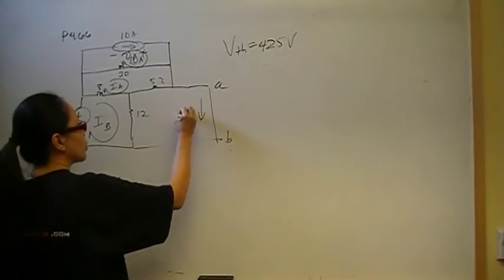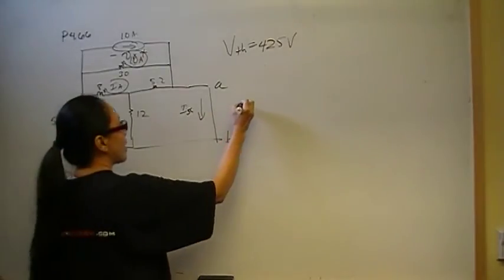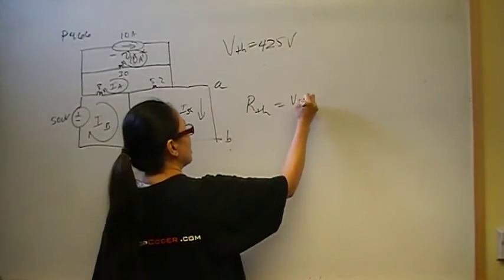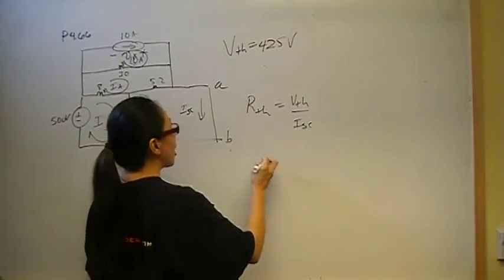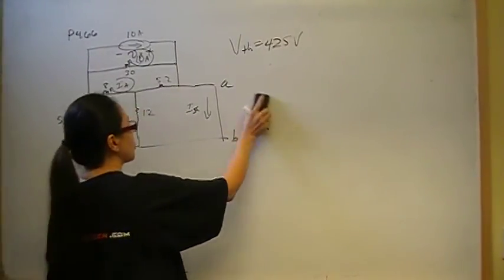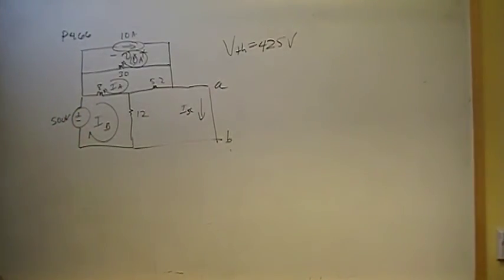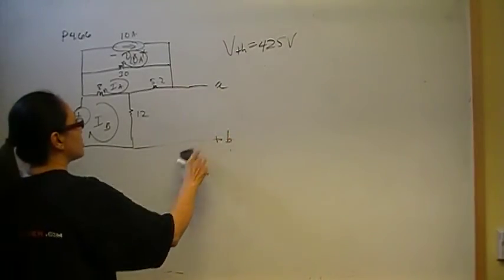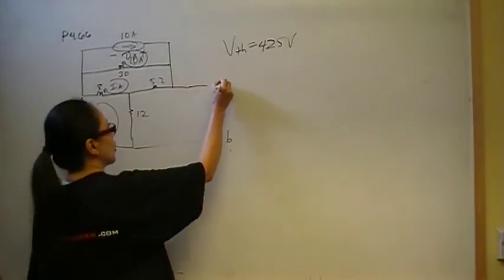Find I short circuit, and then say that R-Thevenin is V-Thevenin over I short circuit. That's option one. Option two is to eliminate the effects of the power sources. And that is to short voltage sources and to open current sources. That seems to be the easier method in my opinion. So that's the method that I chose.